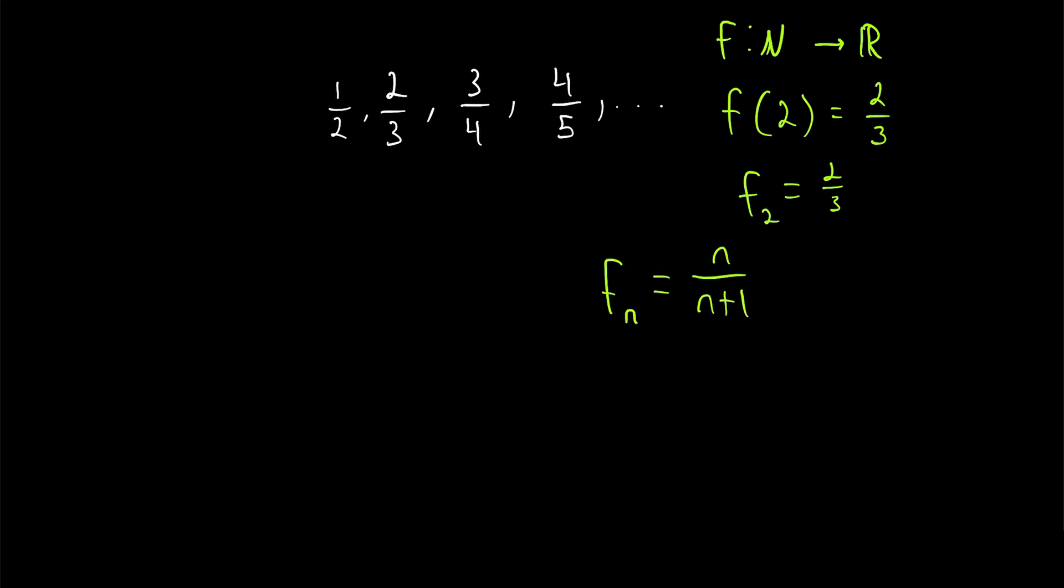Not all sequences have this property that any term in the sequence can be easily calculated by some formula, but a lot of the sequences we'll study do. And it's quite handy. If we want the 100th term in the sequence, for example, f100, that's just equal to 100 divided by 101.